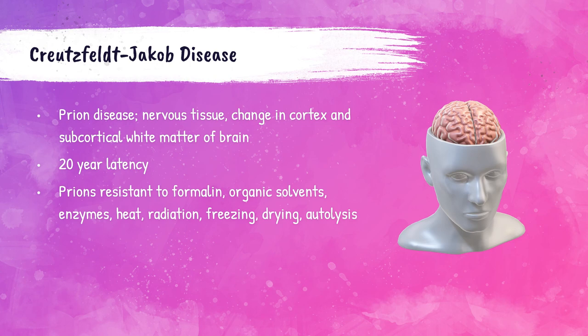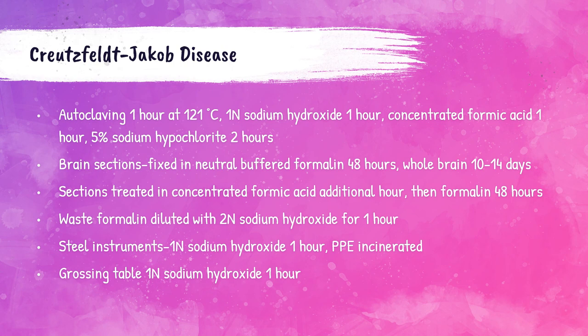Creutzfeldt-Jakob Disease, or CJD, is a prion disease that infects nervous tissue, leading to changes in the brain cortex and subcortical white matter. It is a fatal disease characterized by changes in mental abilities, can have a 20-year latency, and is very resistant to formalin, organic solvents, enzymes, heat, radiation, freezing, drying, and autolysis. Special care needs to be taken with nervous system tissue, especially brain tissue.